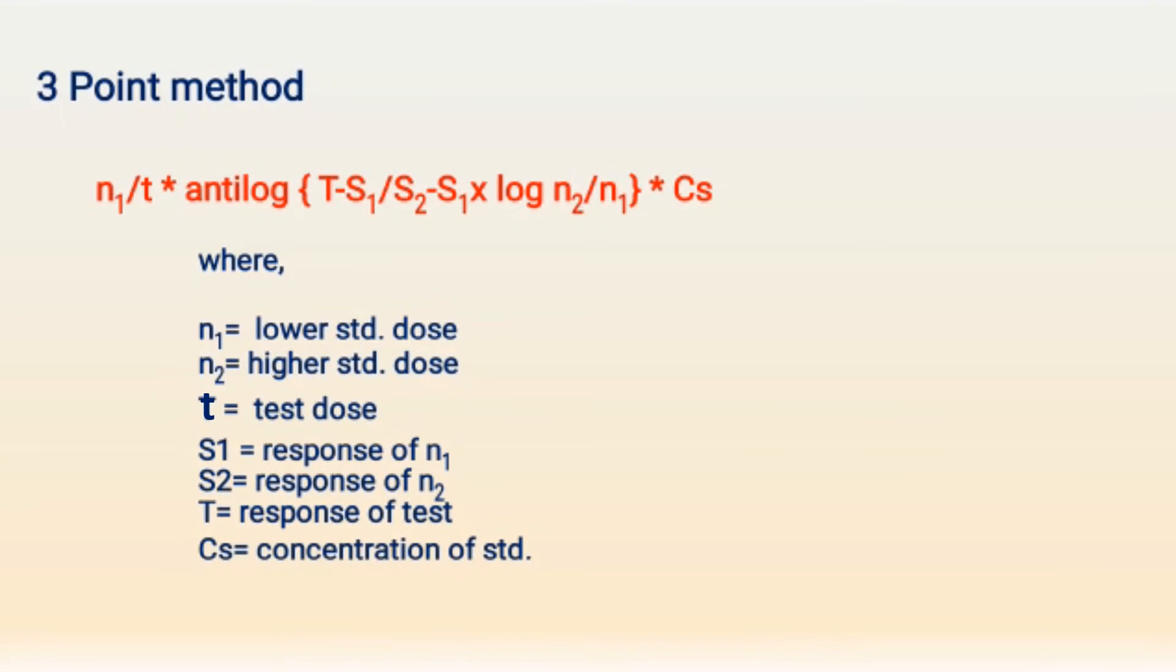In 3 point bioassay, 2 doses of standard that is S1 and S2 are selected. And the dose ratio should be such a way that S2 by S1 should be equal to 2. And the dose of test should produce an intermediate response between S1 and S2. And the sequence of response is S1, S2, T, S2, T, S1, T, S1, S2.